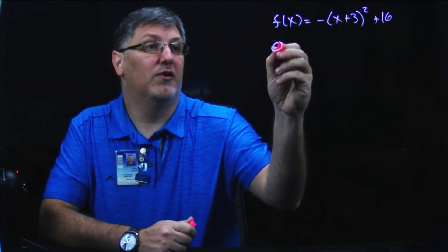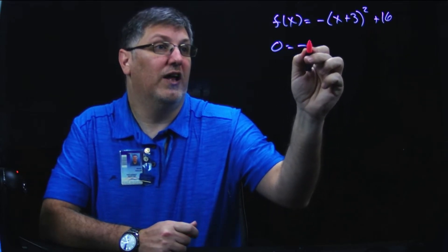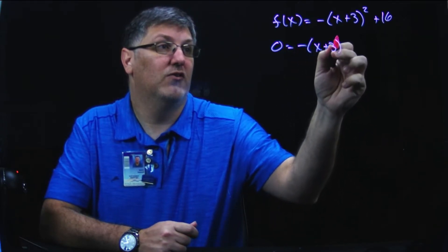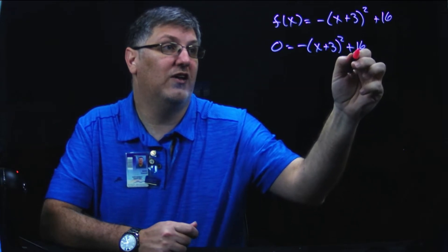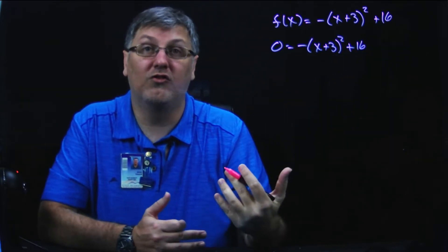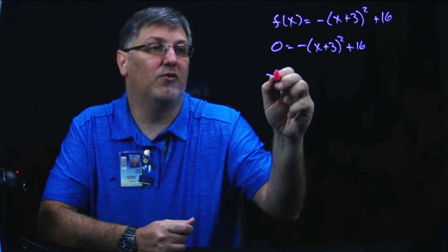So I'm going to have zero equals negative times x plus 3 squared plus 16. Now, all I'm going to do is just solve this. I'm going to subtract 16 from both sides.